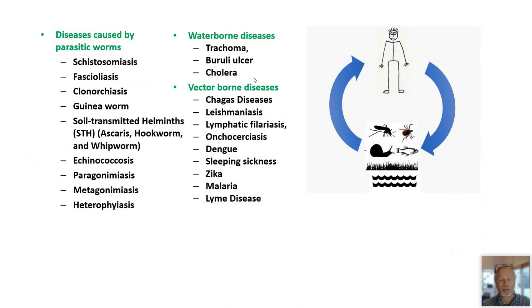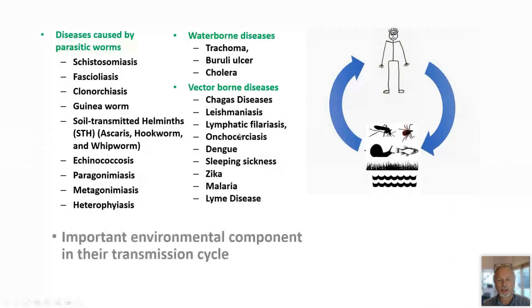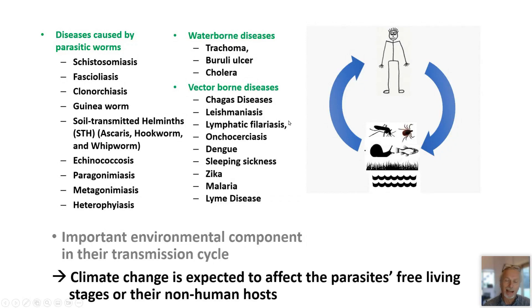The vast majority of parasitic diseases and a large fraction of the so-called neglected tropical diseases — including malaria, as my colleagues just discussed — share really important features. They have an important environmental component in their transmission cycle. We expect that climate change in its multiple dimensions is going to affect either the parasites' free-living stages or their non-human hosts.